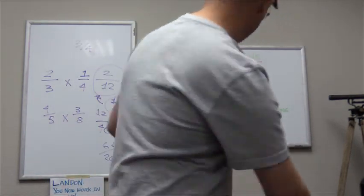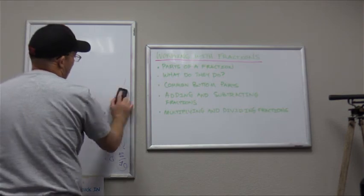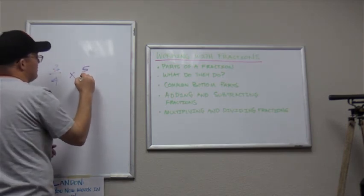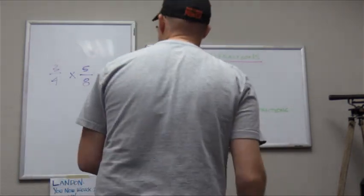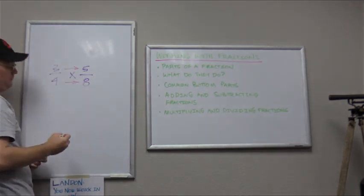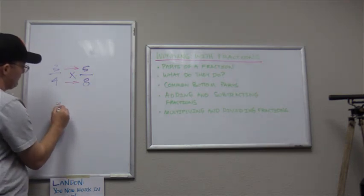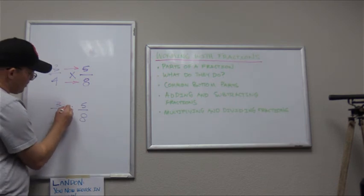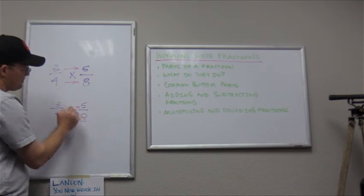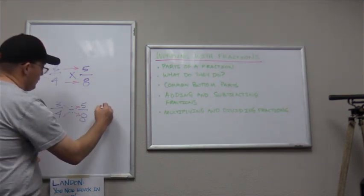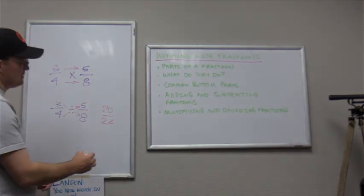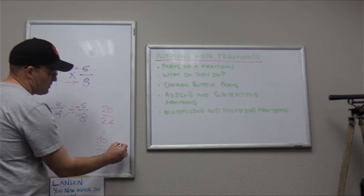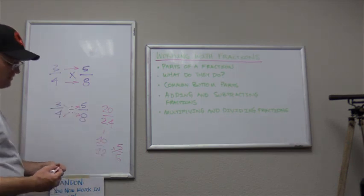Division is just like multiplication, only you swap the order — you do top times bottom and bottom times top, diagonally. So if we're dividing 3 quarters by 5 eighths, we multiply 3 times 8 and 4 times 5. 3 times 8 is 24, 4 times 5 is 20. Divide by 2: 10 twelfths. Divide by 2 again: 5 sixths. So 3 quarters divided by 5 eighths is 5 sixths — that's the simplest form.